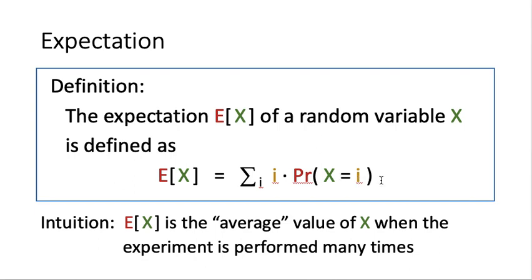The intuition of expected of x, or the expectation of x — these two are the same — is the average value of x when the experiment is performed many, many times.